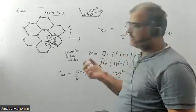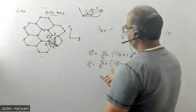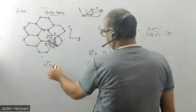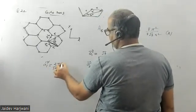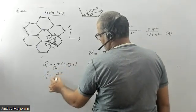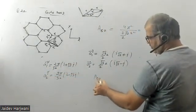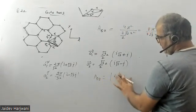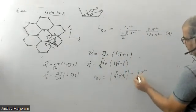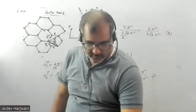Alternatively, since we already have the direct lattice vectors, we can calculate the primitive lattice vectors of the reciprocal lattice. Using the known direct lattice vectors, a1'* becomes (2π/3a)(i + √3 j) and a2'* becomes (2π/3a)(i − √3 j). Computing a1'* cross a2'* gives the same answer: 8π² / (3√3 a²). This confirms the solution. Hope you liked it, thank you very much.